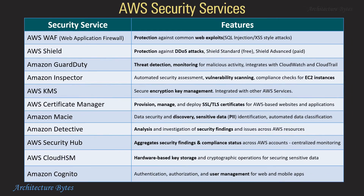AWS Security Services: AWS WAF or Web Application Firewall provides protection against common web exploits like cross-site scripting, SQL injection, etc. AWS Shield provides protection against DDoS attacks and comes in two flavors — Shield Standard which is free, and Shield Advanced which is a paid service. Amazon GuardDuty provides threat detection and monitoring for malicious activity.